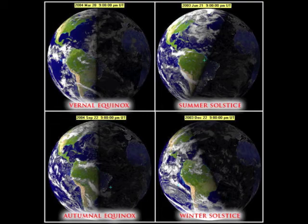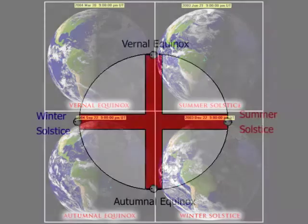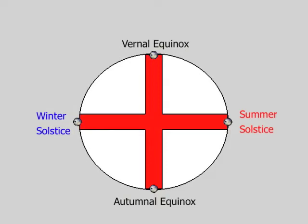The earth's tilt is the reason we experience seasons. The seasons are defined by the earth's orbit, which contains two solstices and two equinoxes. Looking at the solar system from above, the seasons naturally make a cross. Whicherink and Parlier call this the earth's cross.